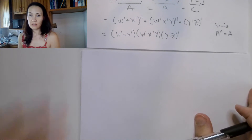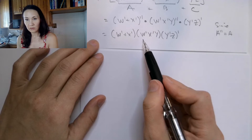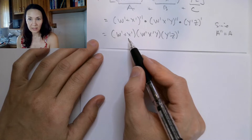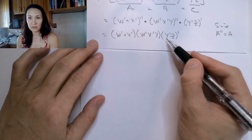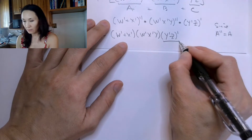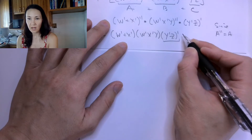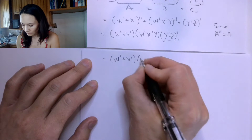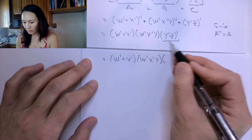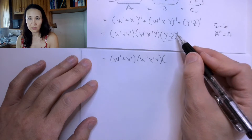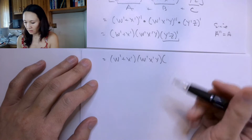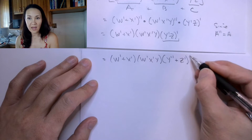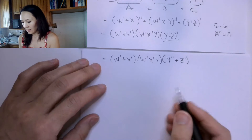Continuing with the simplification: these terms here are being ANDed together, these are being ANDed together, and these are being ORed together. But I still have this NOT on the outside of this term right here. So let me apply De Morgan's to this to get rid of that NOT on the outside of the parentheses. I'll keep the first two terms the same, and if I apply De Morgan's to the third term, I distribute this NOT into all the inputs and change the AND to an OR. So this becomes y'' OR z', and now I don't have that NOT on the outside anymore.